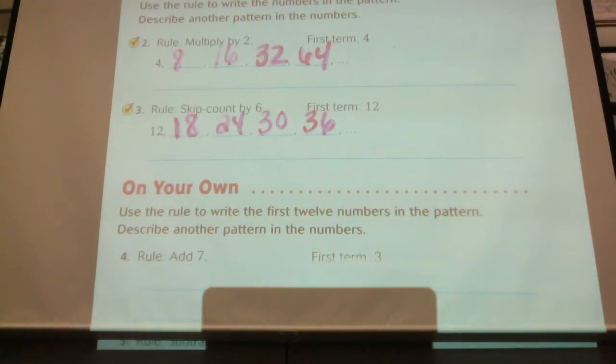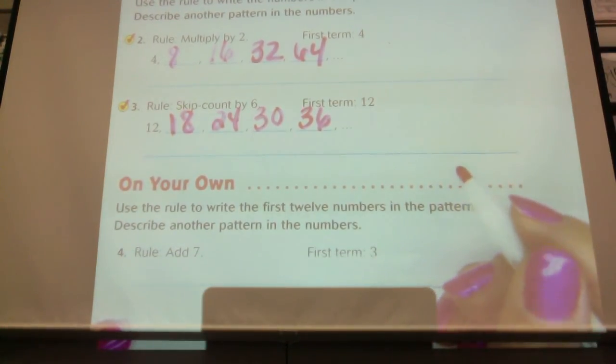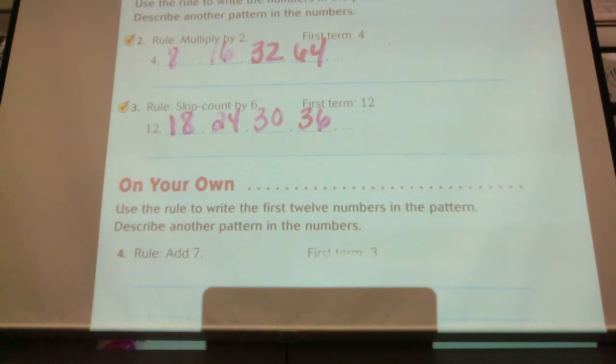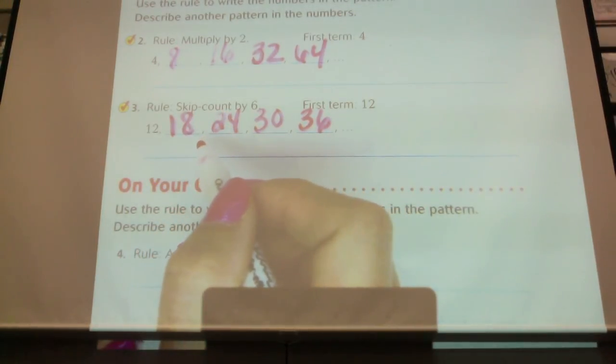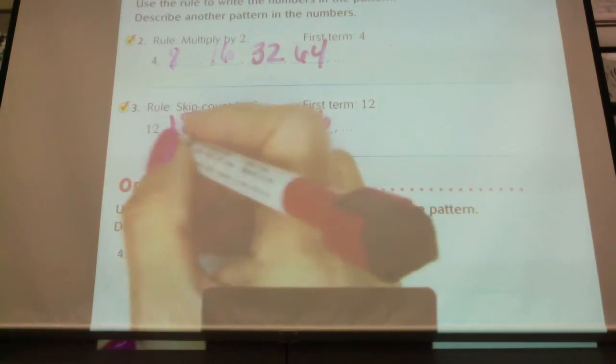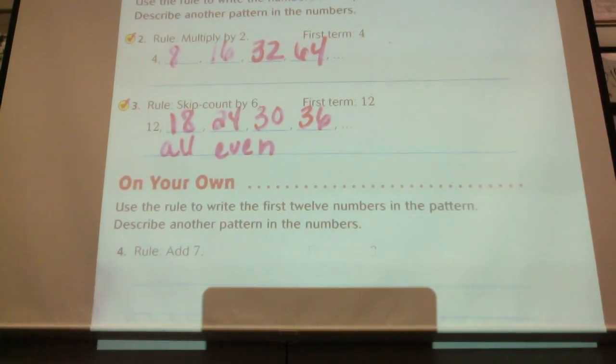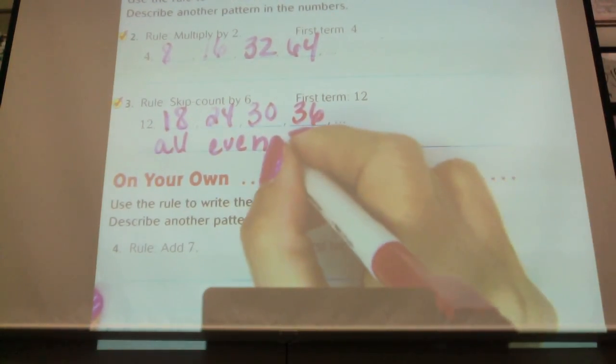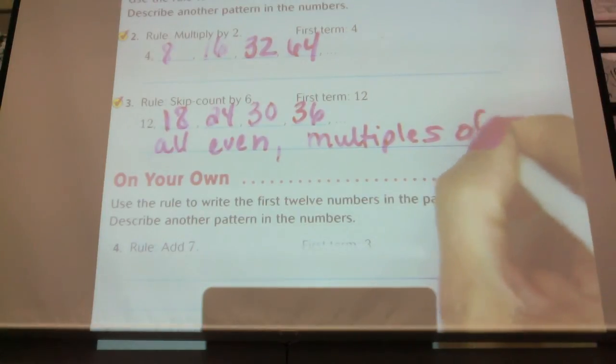Did anybody, would anybody like to share the other rule that they came up with? Aiden? I'm looking for another pattern. I mean, sorry, not another rule. Another pattern. Daniel. By all of these, we're adding six. Okay, that was what it was telling us to do though. Skip count by six. What's another pattern we did here? Luna. They are all even. They are all even. Is it all even numbers? No, but these are all, the ones up here are all even. What else can we say about them? They're all, if I use a word that starts with M? Multiples. Multiples of? Six. Six. Of six. Okay.